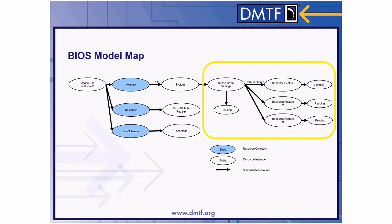Taking a closer look at the BIOS resource, we can see that it will have a current settings resource and a pending settings resource, and here we will be applying all the changes needed. We'll also have OEM and feature resources. Under the service route, there is a registries collection and a JSON schema collection, and under these two collections you will find the BIOS schema and the attribute registry.